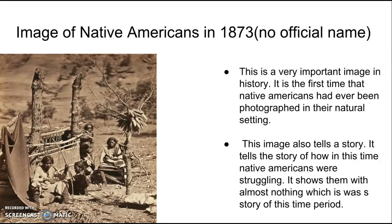The next image is of Native Americans in 1873. It has no official name, but it is a really historically profound image as it was the first time Native Americans had ever been photographed in their natural setting. In the image you can see their natural setting isn't ideal — the shelter isn't great, they have their corn up in the tree — and to me this also tells the story of how during this time period, life as a Native American was very rough. It was right after the Trail of Tears and they were being pushed out of their lands, which is what this image shows.